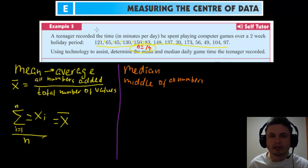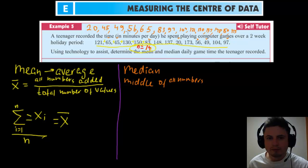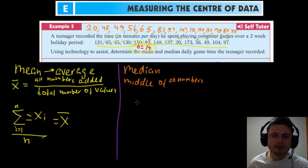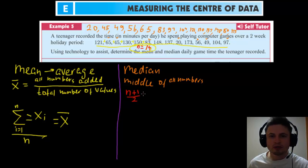Let's reorder these numbers starting with the smallest first. It's a little bit difficult with bigger numbers and very easy to make a mistake, which is why this is best done with technology — I'll show you how after the manual method. These are the numbers from smallest to biggest. To find the median, we use the formula (n + 1) / 2, which gives us 15 / 2 = 7.5. So we're looking at the value between the 7th and 8th numbers.